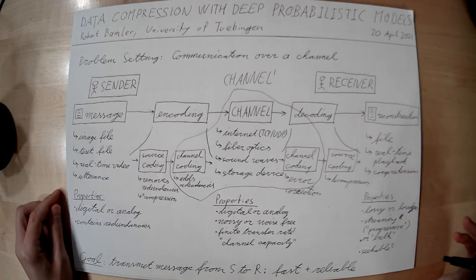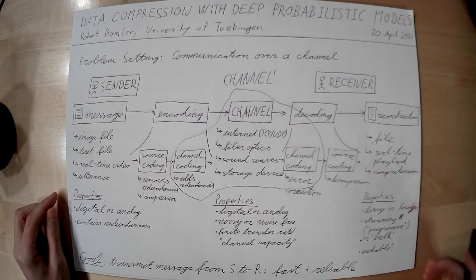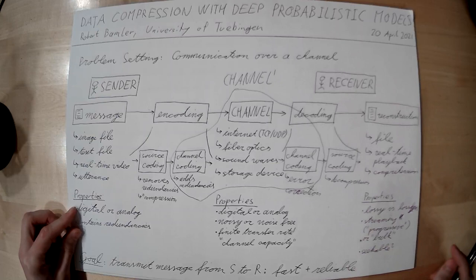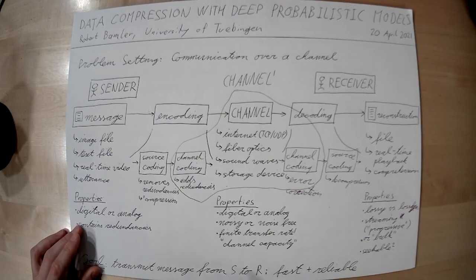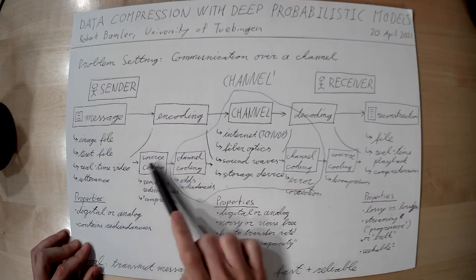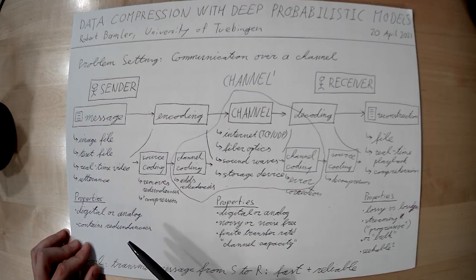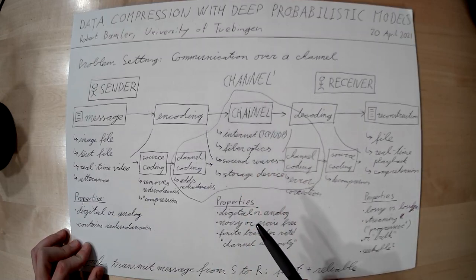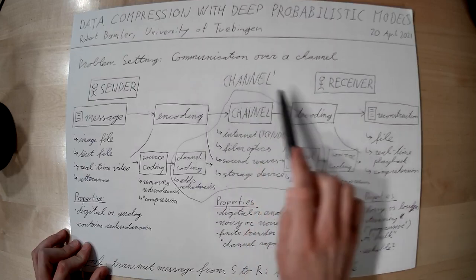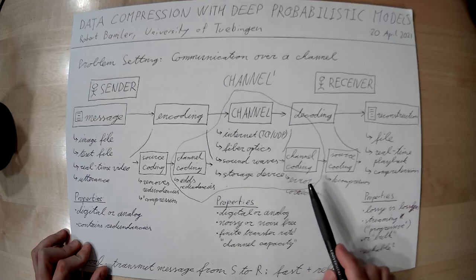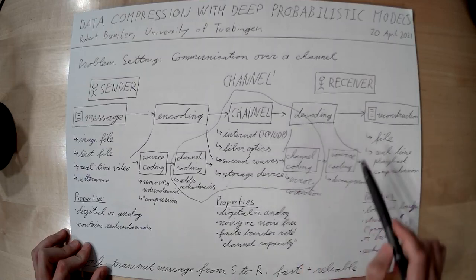Last week we first talked about communication in a very general manner. Our goal was to transmit a message from some sender to a receiver in a way that is fast and reliable. We saw that in order to do that, we have to think about redundancies in the message. We have to first remove redundancies that are in the message to begin with, and then since the channel could introduce some noise, we have to add some strategically placed redundancies back in so that even if there's some noise in the channel, we can still decode the received message on the other end of the channel.